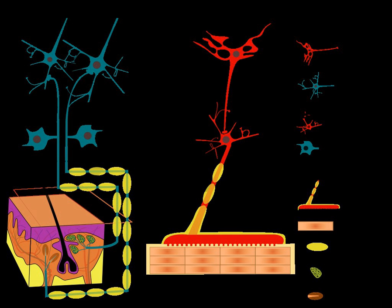An important issue for coordinating the motor system is the problem of the redundancy of motor degrees of freedom. Many actions and movements can be executed in multiple ways because functional synergies controlling those actions are able to co-vary without changing the outcome of the action. This is possible because there are more motor components involved in the production of actions than are generally required by the physical constraints on that action. For example, the human arm has seven joints which determine the position of the hand in the world, but only three spatial dimensions are needed to specify any location the hand could be placed in. This excess of kinematic degrees of freedom means that there are multiple arm configurations that correspond to any particular location of the hand.